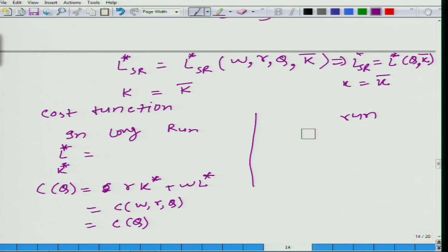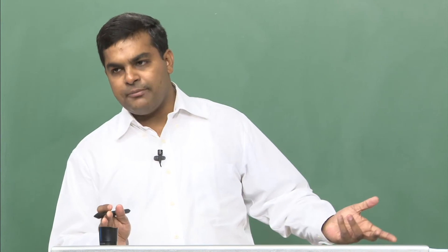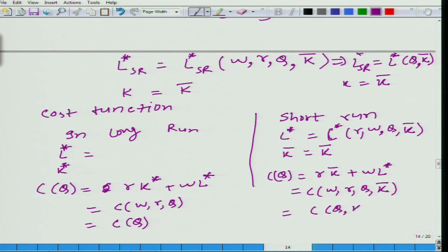Now in the short run: L* is a function of W, R, Q, and K-bar. The cost function gives the minimum cost required to produce Q amount of output given the price of inputs in the market. So in the short run we get: C = R·K-bar + W·L*. This gives us C as a function of W, R, Q, and K-bar — or simply C as a function of Q and K-bar. This is the short run cost function.